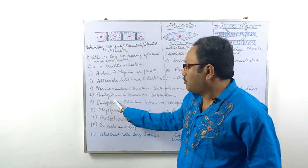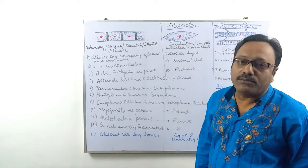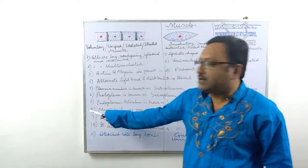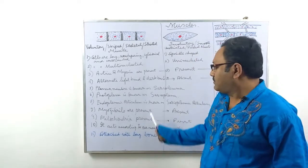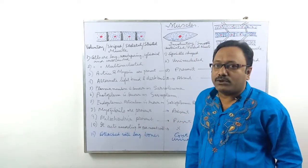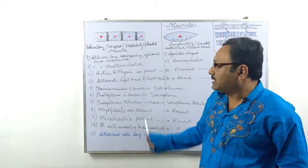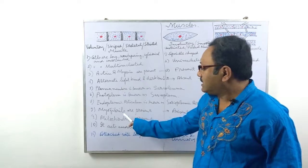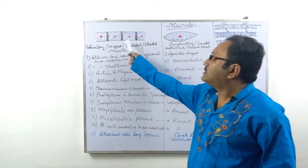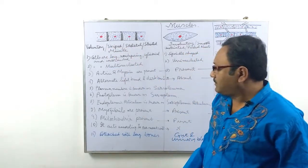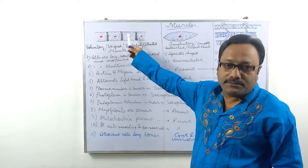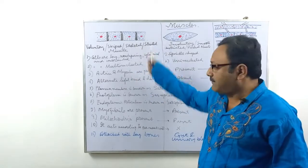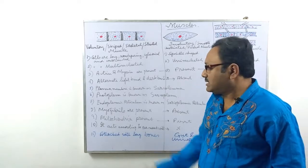Point number six: protoplasm is also known as sarcoplasm — the protoplasm of the muscle is called sarcoplasm. Point number seven: the endoplasmic reticulum is known as sarcoplasmic reticulum. The myofibrils are present. Mitochondria is also present — for contraction and relaxation of the muscle, huge amounts of energy are required, supplied by ATP produced inside the mitochondria.